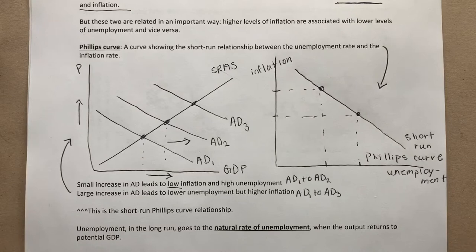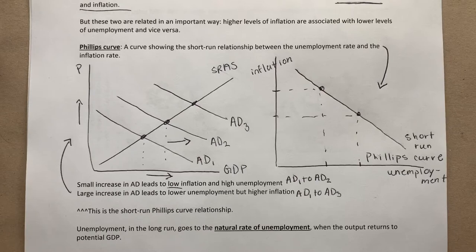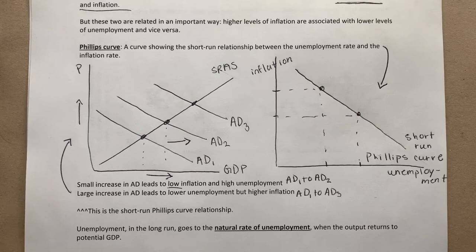During the 1960s, some economists argued that the Phillips curve was a structural relationship — one that depends on the basic behavior of consumers and firms and remains unchanged over long periods of time. Before the 1960s, this relationship appeared to be quite stable, and a policymaker could choose a point on the curve, trading permanently higher inflation for lower unemployment or vice versa. However, this didn't turn out to be true — allowing more inflation doesn't permanently lower unemployment.